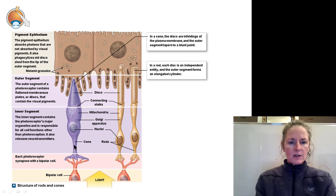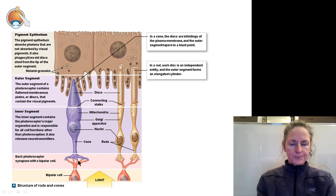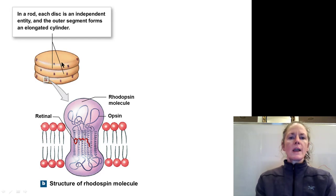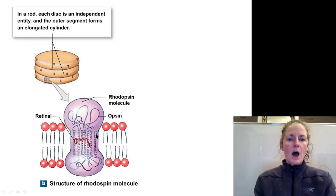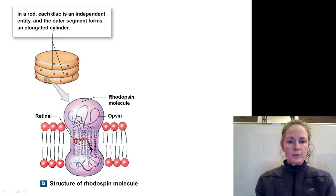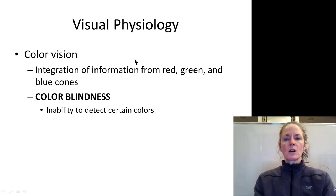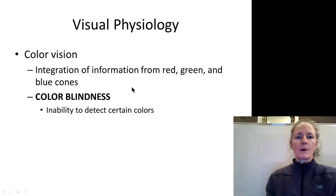Each photoreceptor has an inner segment with an axon-like structure that releases neurotransmitters, which will be in contact with our bipolar cells. In a rod's membranous disk, we have rhodopsin — this barbell-shaped protein called opsin embedded in the inner membrane segment, with the molecule retinol inside it. Retinol is a bent molecule. When a photon of light strikes it, it straightens the molecule out, initiating a cascade of events that leads to signal transduction.